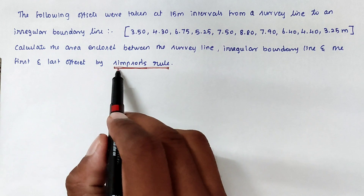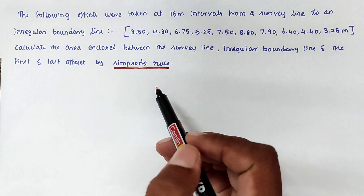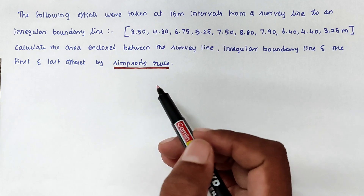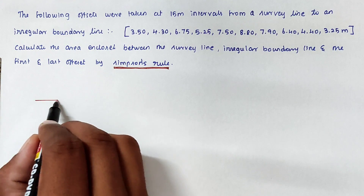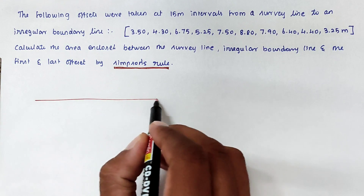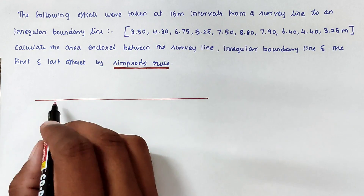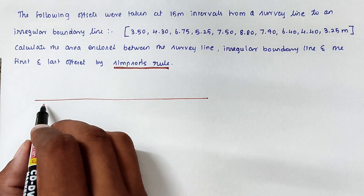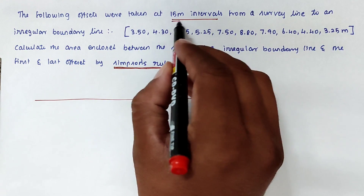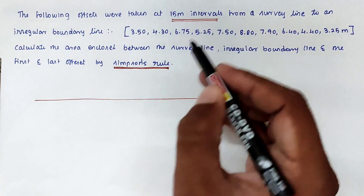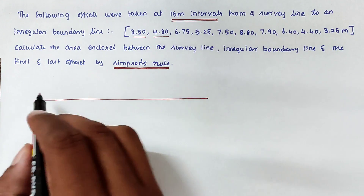We will use Simpson's rule to calculate the area. Now we can draw the diagram. This is the offset line, and at every 15-meter interval the readings are given.